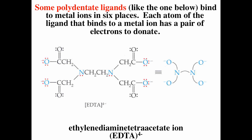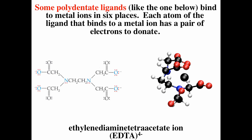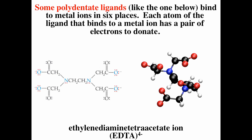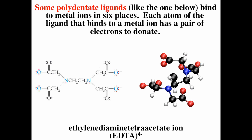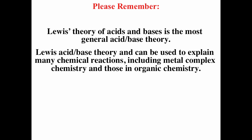Again, it's just a Lewis acid-base reaction — the Lewis base donates the electron pair and the metal ion behaves like a Lewis acid, accepting the electron pairs. EDTA is really cool because it actually wraps around the metal. On the right-hand side you can see the metal as a black sphere in the middle, surrounded by four oxygens in red and two nitrogens in blue. Lewis acid-base theory is the most general acid-base theory we talked about, and can be used to explain many chemical reactions including organic chemistry, metal complex chemistry, and even biochemistry.